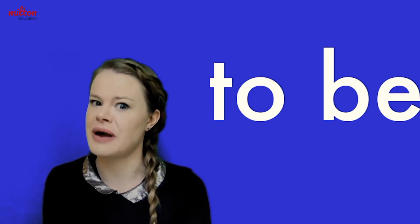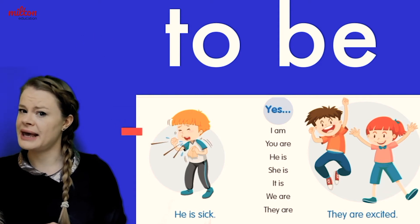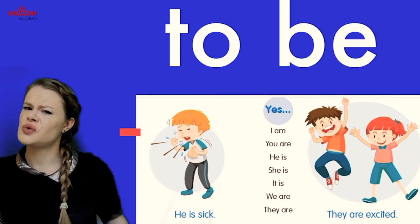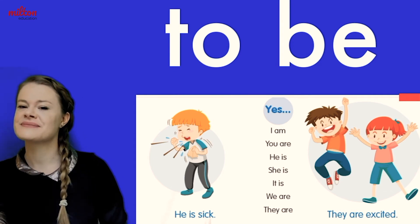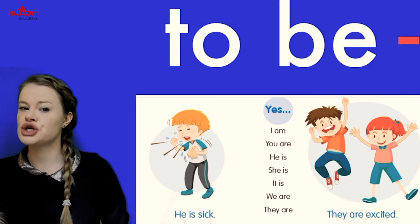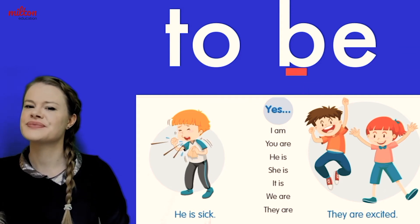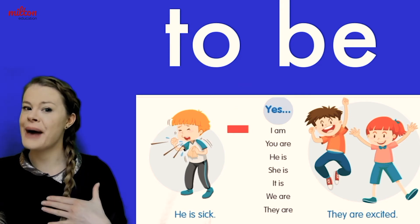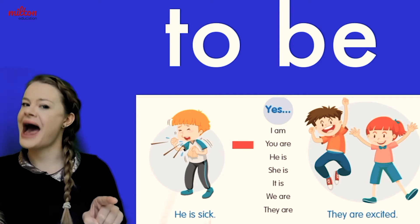Let's take a closer look at your grammar page. Here we have your grammar page. Can you see that? This boy here is sick, and these guys over here — they are excited. That's because we use the verb 'to be' when we want to talk about feelings.